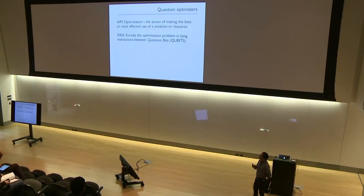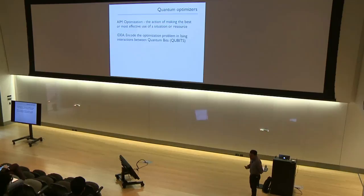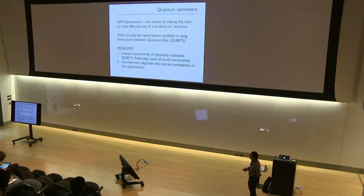Once we map the problem that we are interested in solving to qubits, the hope is that quantum mechanics and quantum interactions help us in getting the solution faster than classical algorithms. The two main problems facing quantum annealing at the moment are, first, connectivity, and second, decoherence.